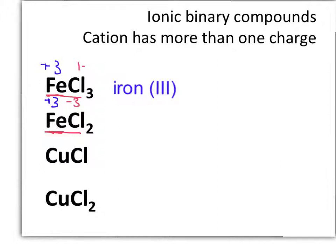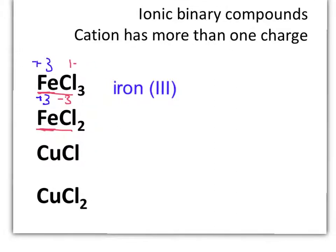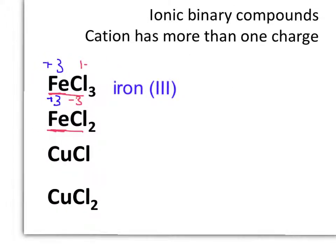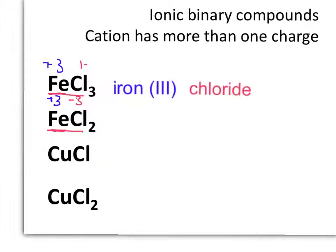So the name of this cation is iron three because its charge is three plus. We call this iron Roman numeral III. So this is iron Roman numeral III chloride — we use the same rule for the anion, which is just chloride. The name of this first compound is iron(III) chloride.